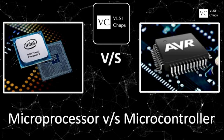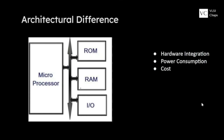Let's see the difference from the design or architectural point of view. In a microprocessor, all the components like RAM, ROM, input/output devices, and other modules are connected externally to the microprocessor chip, so the system becomes quite heavy and bulky. While in a microcontroller, all these external peripherals are embedded within the chip — we can refer to this as a system-on-chip — making the design architecture much simpler and compact.